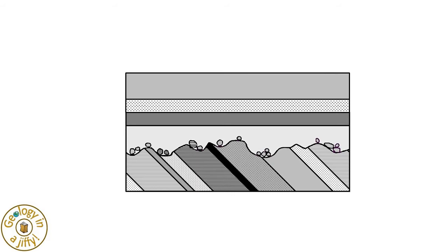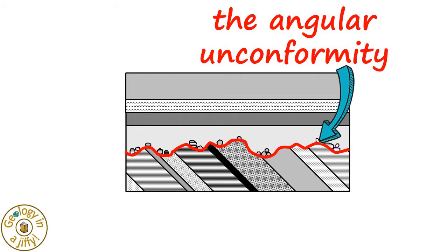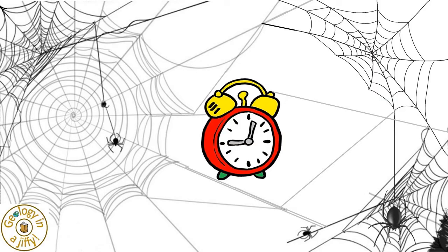In reality, Angular Unconformities can be quite pronounced, with the Unconformity very clear to see at the boundary between the older tilted rocks and the younger rocks that overlie them. The surface of Angular Unconformities often represents a very long gap in time between the older and younger beds — often many millions of years.